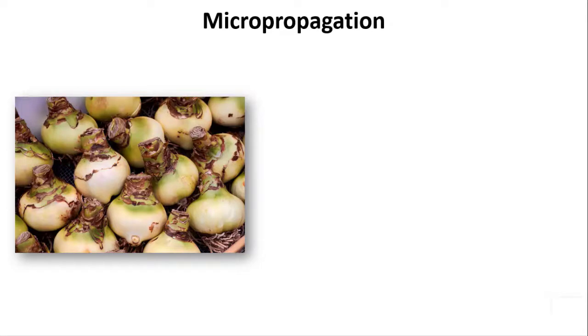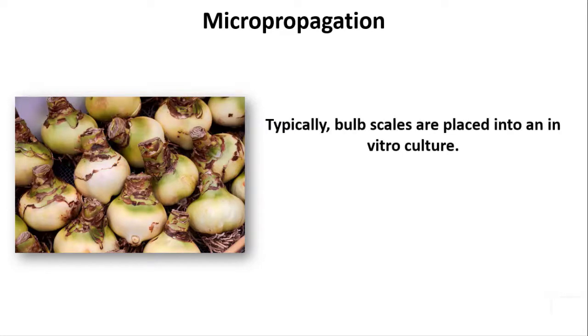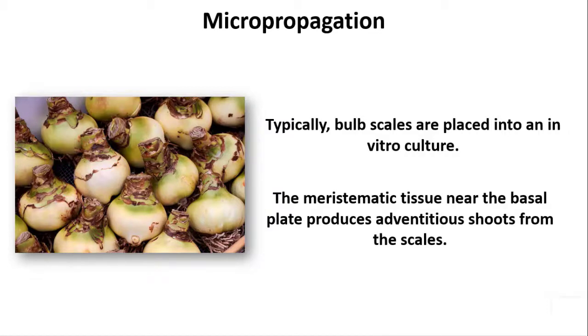Micro propagation. Typically, bulb scales are placed into an in vitro culture. The meristematic tissue near the basal plate produces adventitious shoots from the scales.